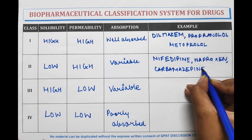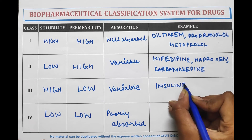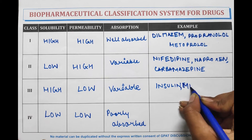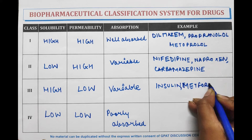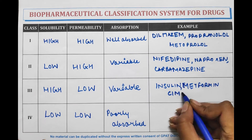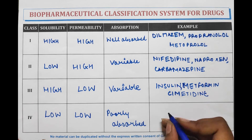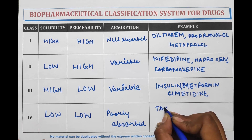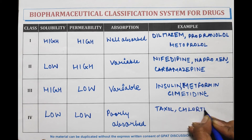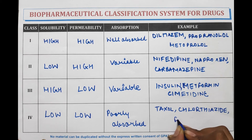Class three drugs are insulin, metformin, and cimetidine. Class four drugs are taxol, chlorothiazide, and furosemide.